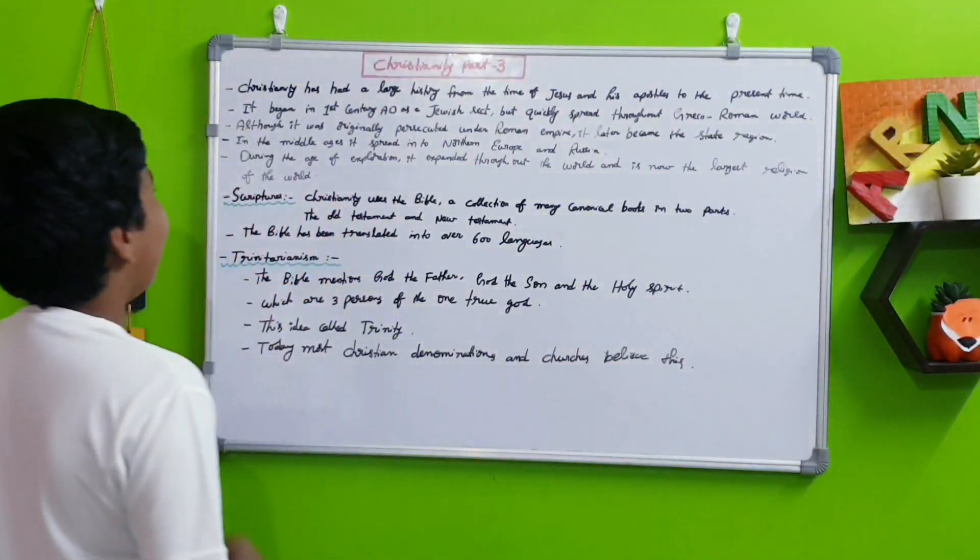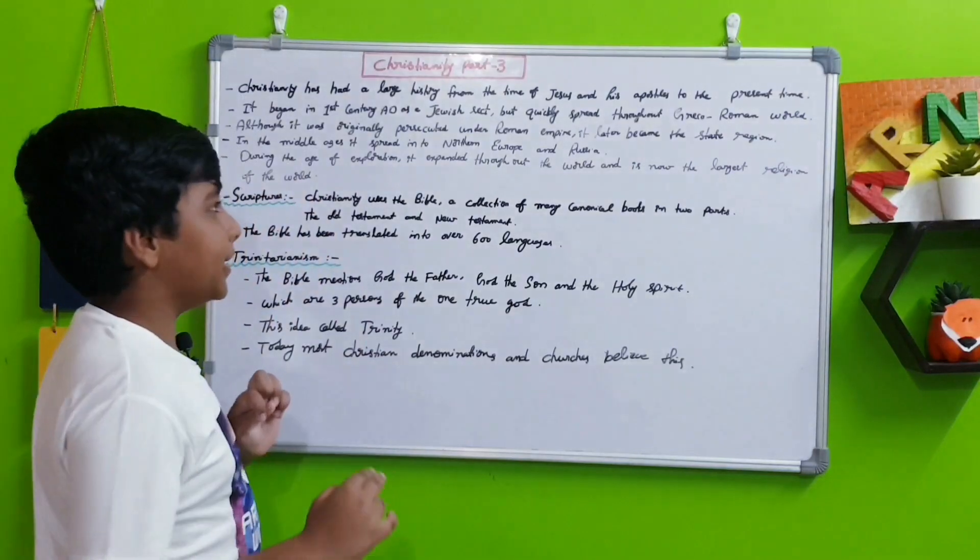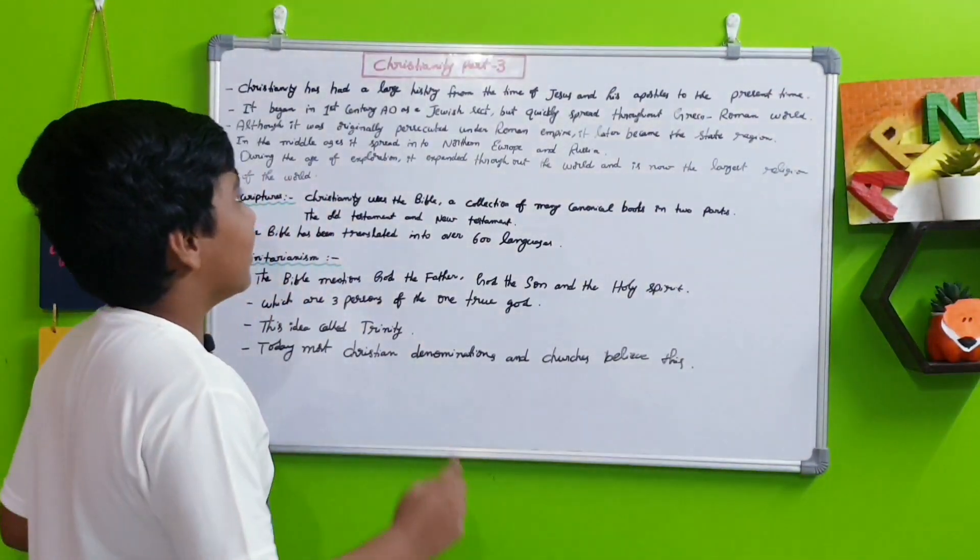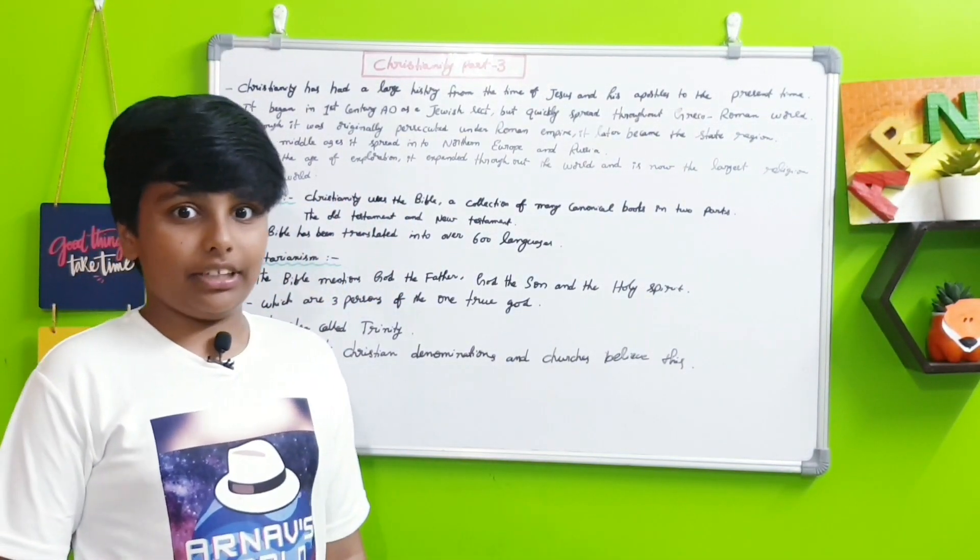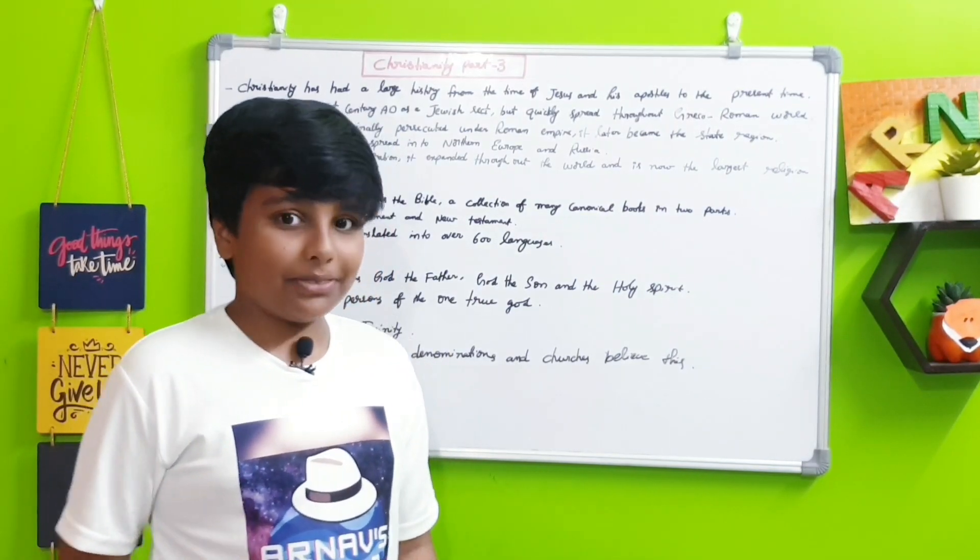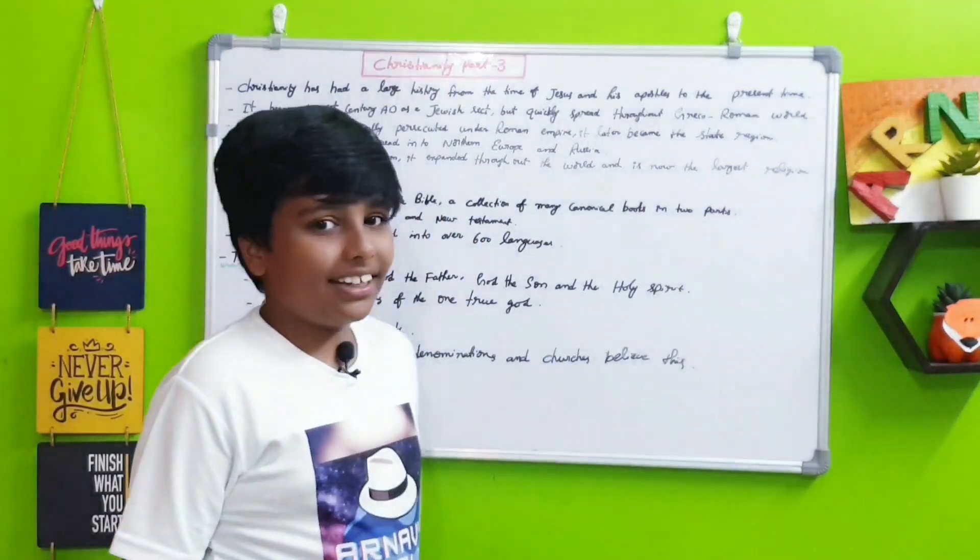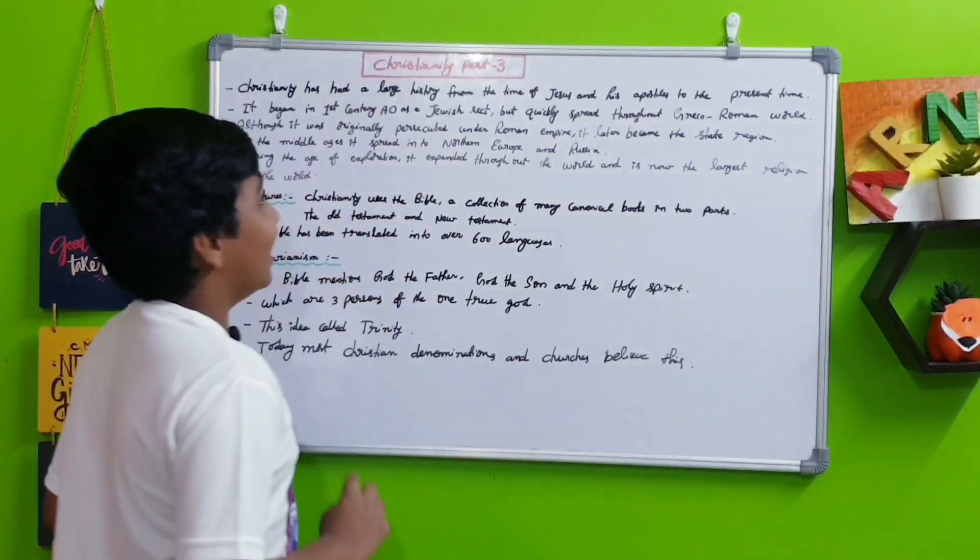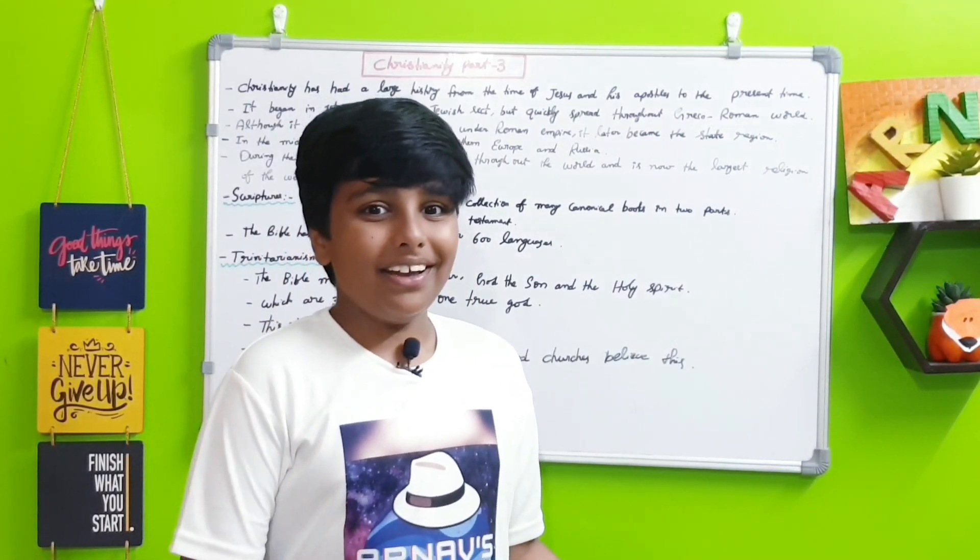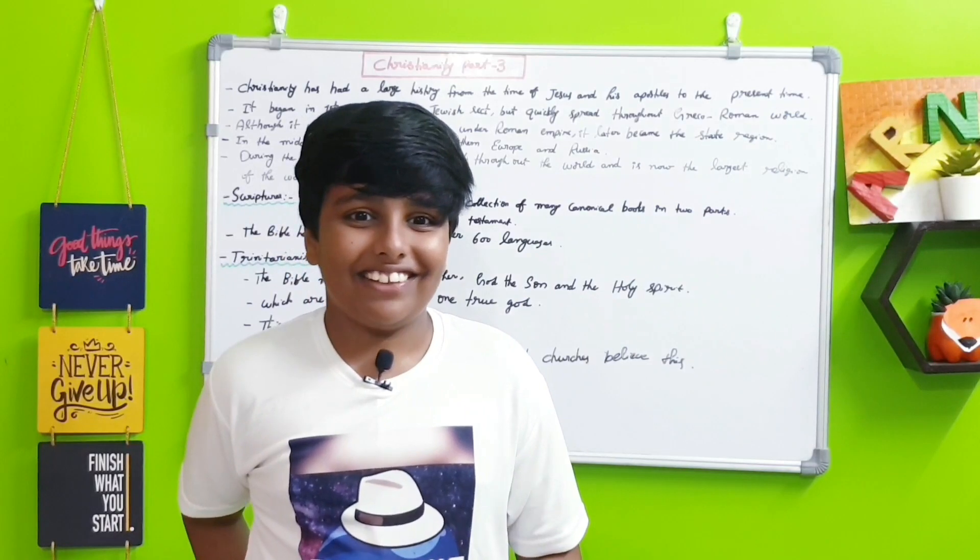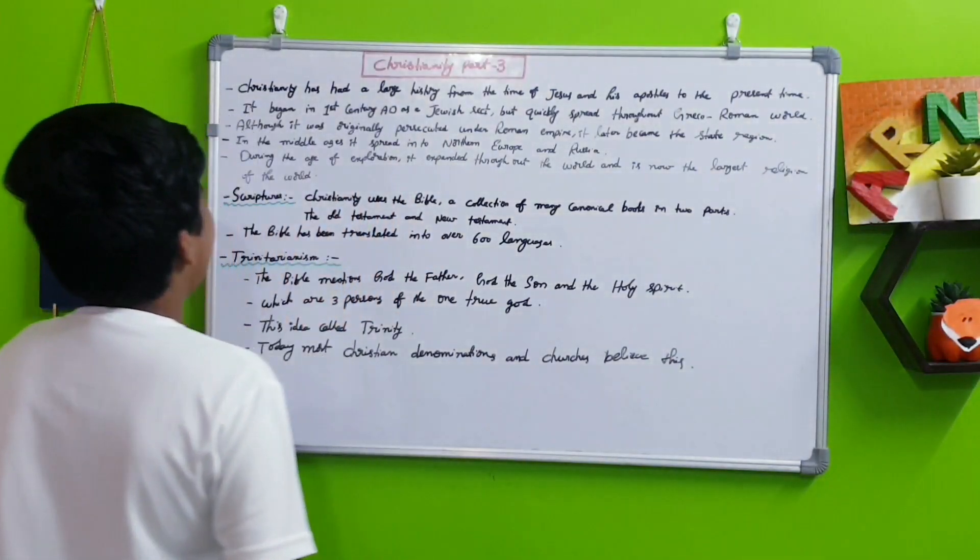Although it was originally persecuted under the Roman Empire, it later became the state religion. First it was persecuted, people were arrested who supported and were Christians, they were put in jail and executed, a lot of bad punishment for just adopting a religion. But under King Constantine, this later became the state religion. Christianity, once being a banned religion in the Roman Empire, became the state religion.